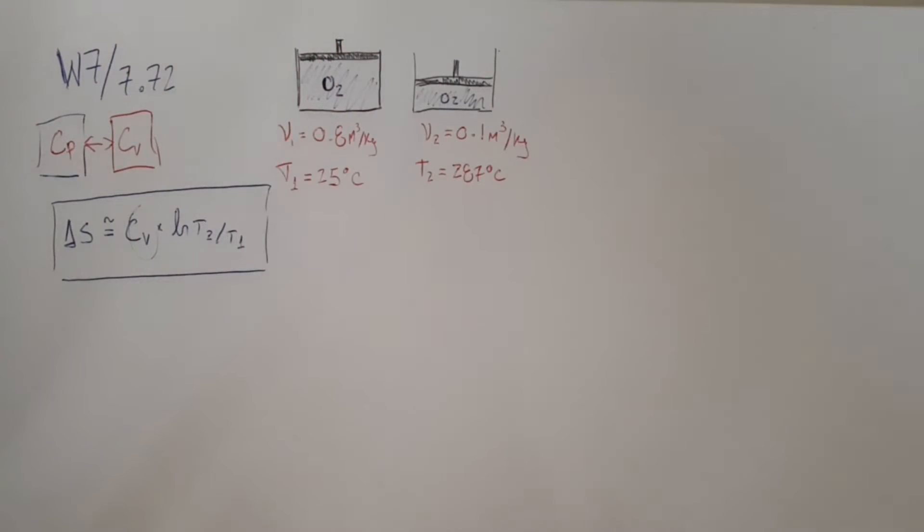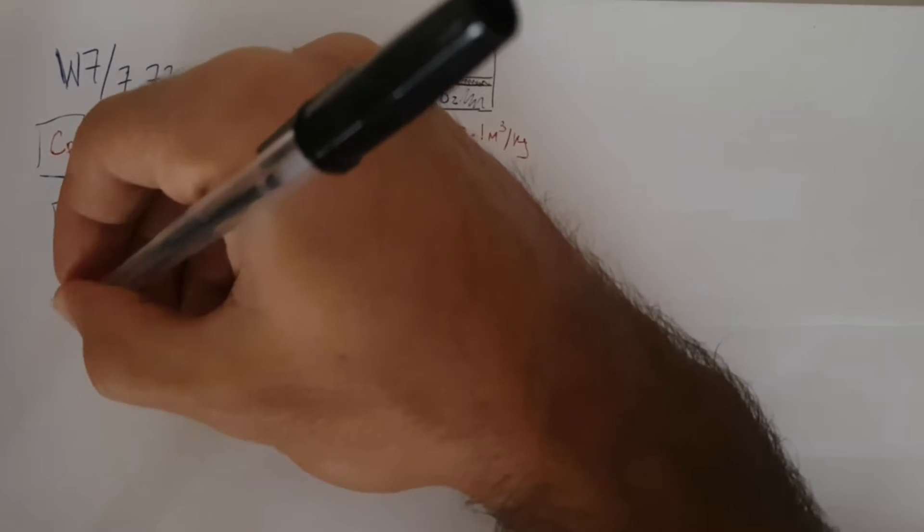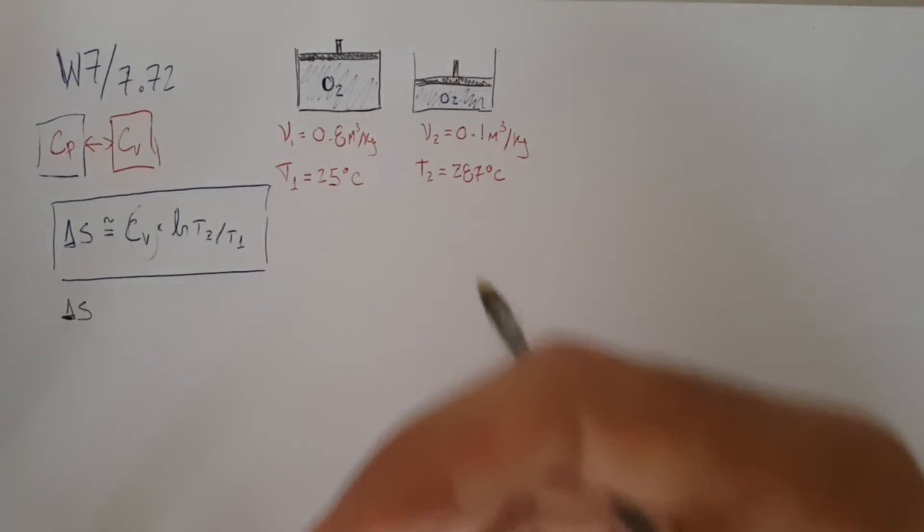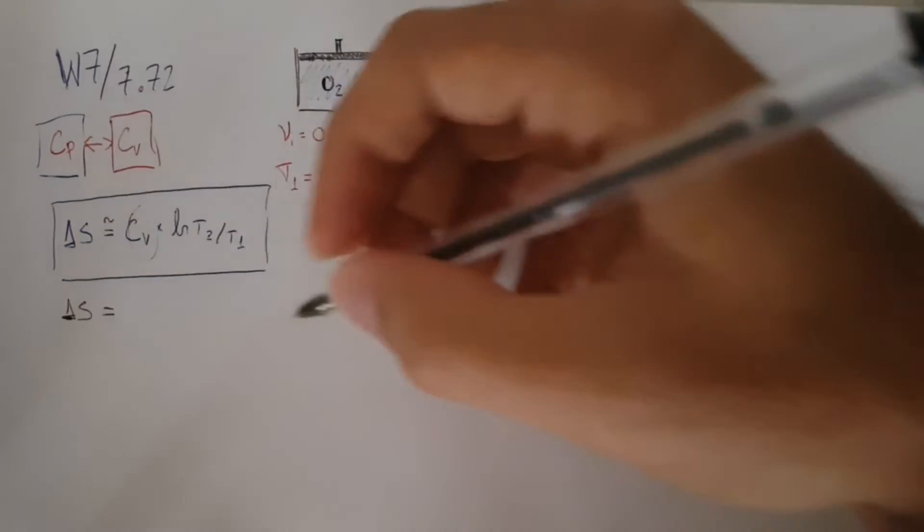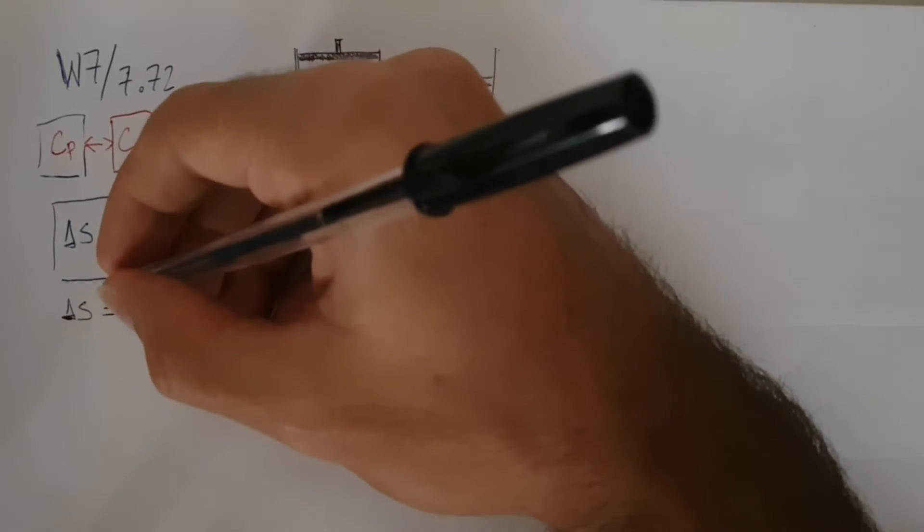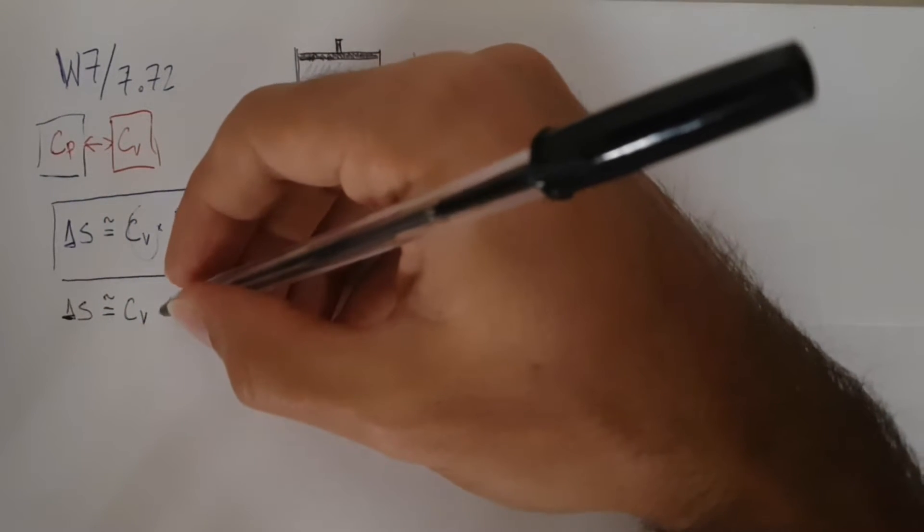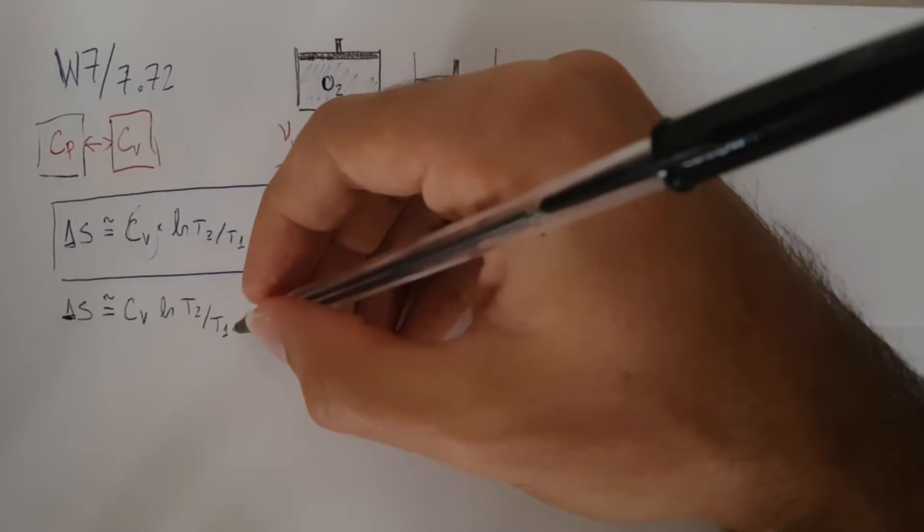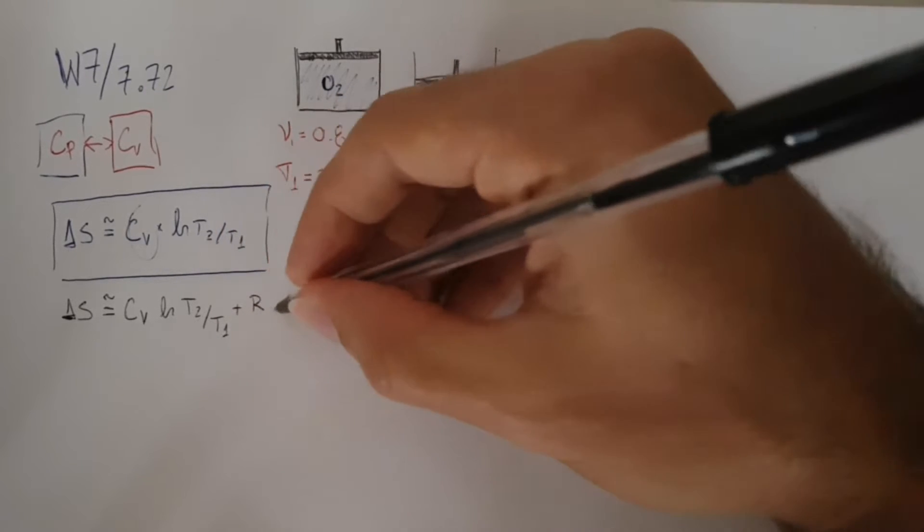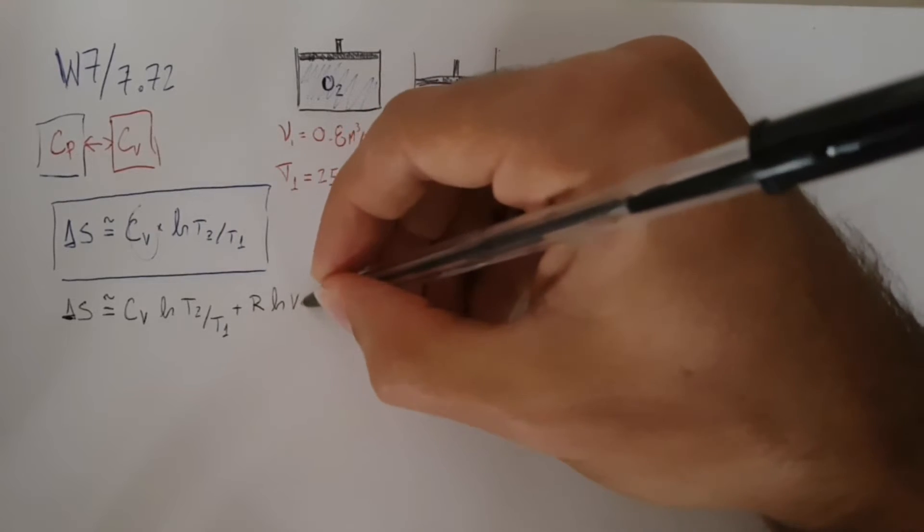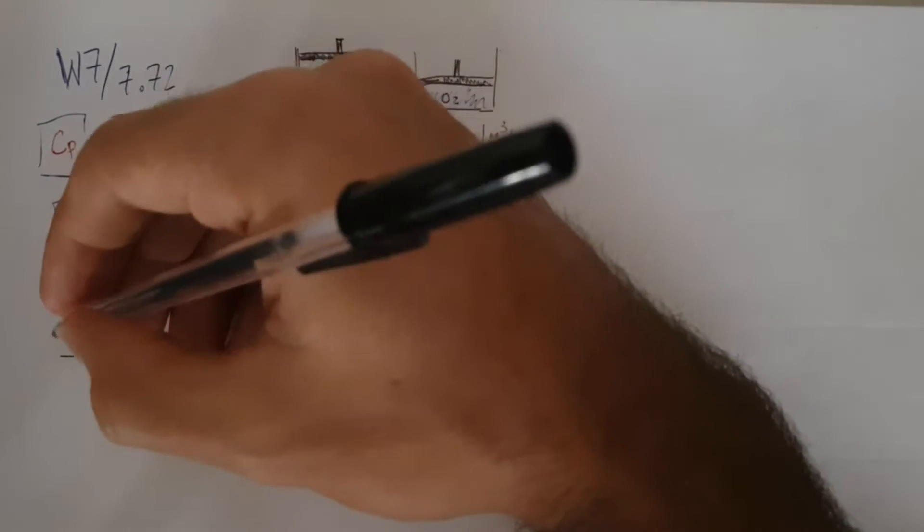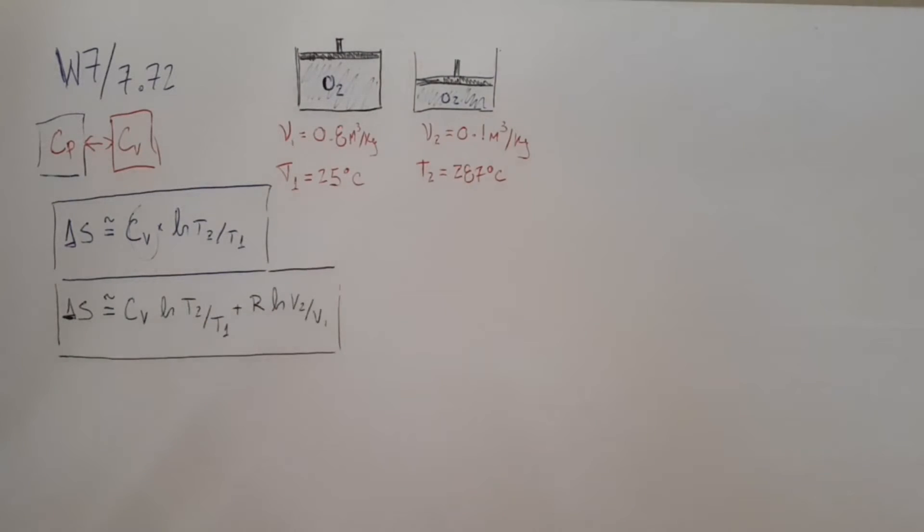For ideal gases, there are two different equations we can use depending on whether we have the volume or the pressure, and they're related by the ideal gas relationship, PV equals nRT. One of them is CV average natural log of T2 over T1, but because we also have the other properties of the gas that influence entropy, we also have to account for those, adding R times natural log of V2 over V1. This is the final format of the equation in the approximation form, valid for ideal gas.